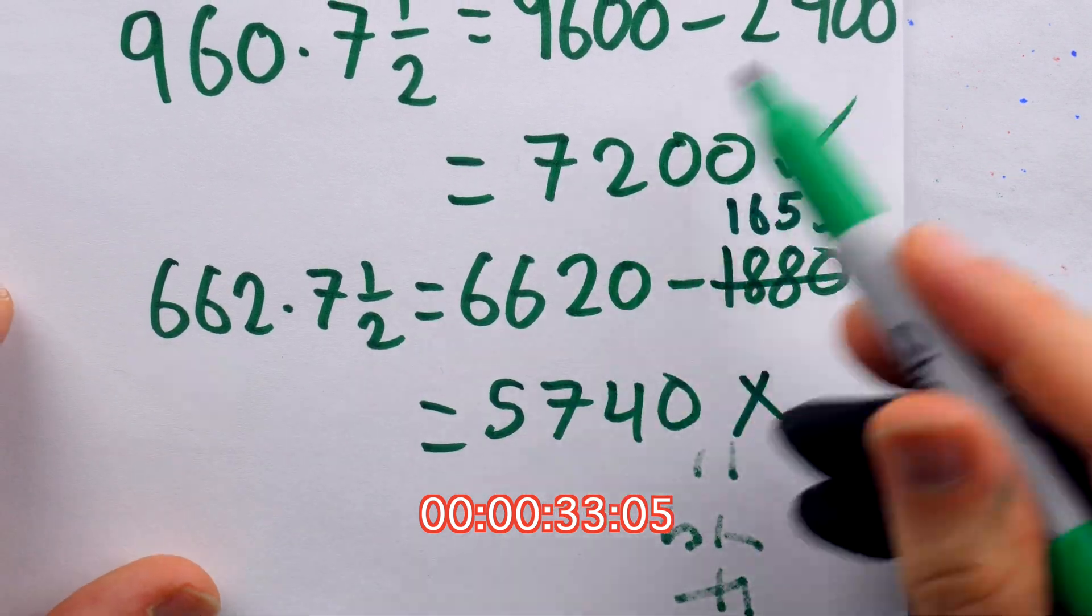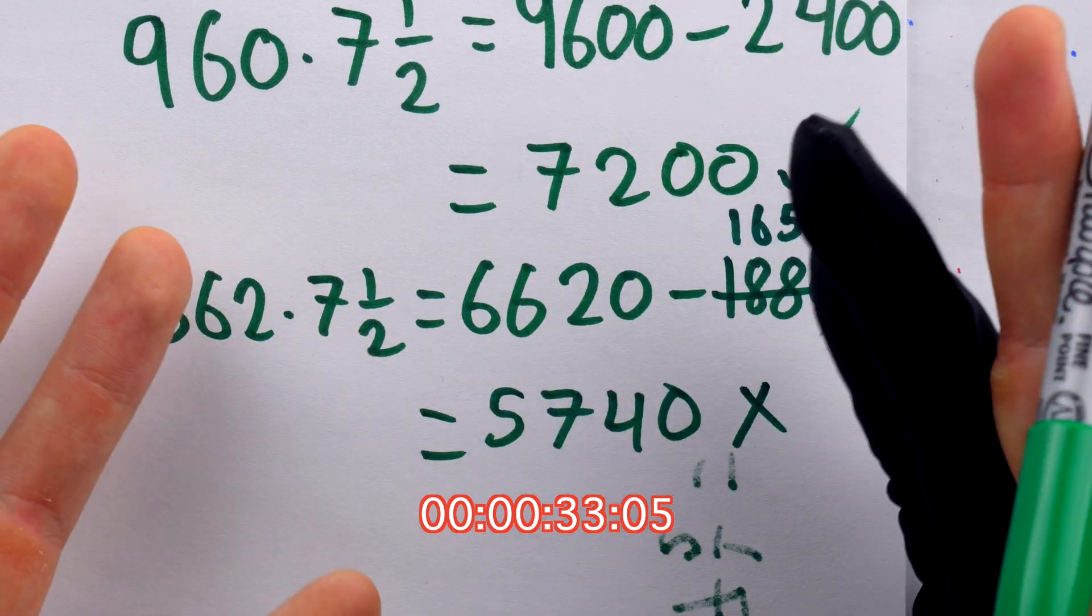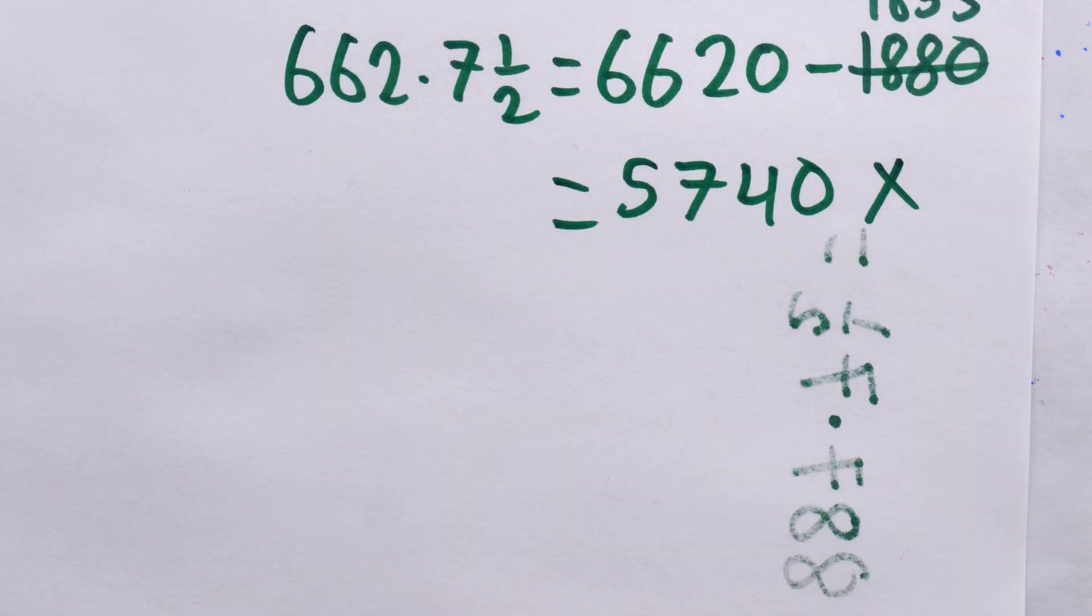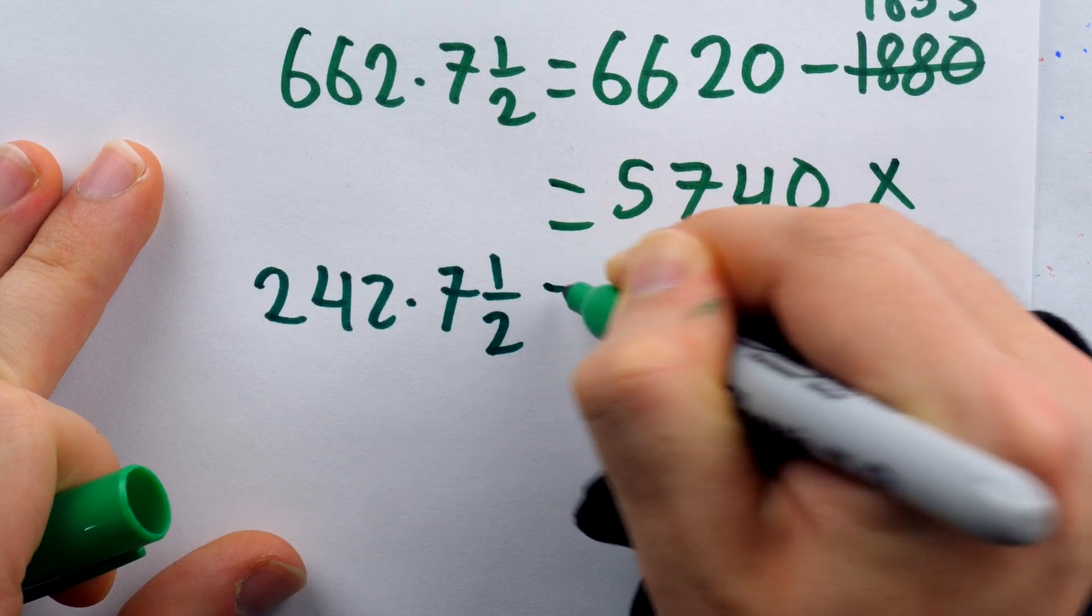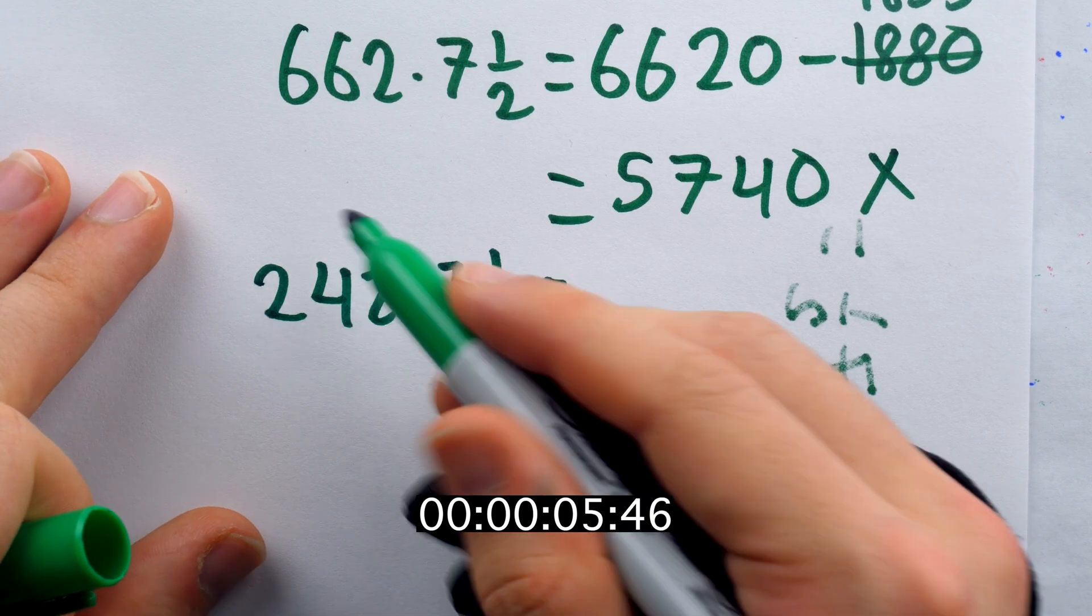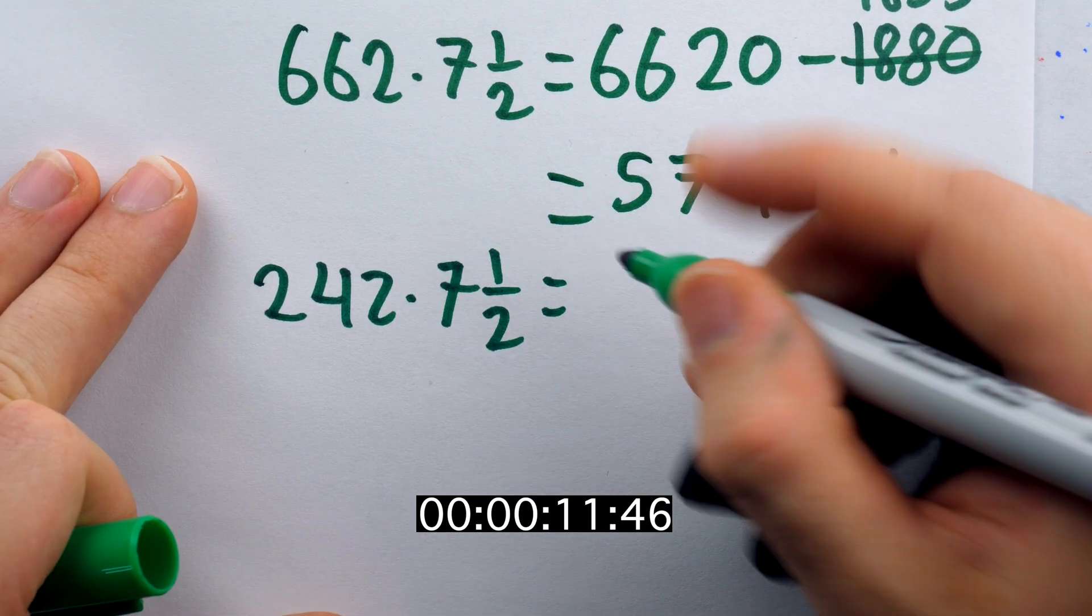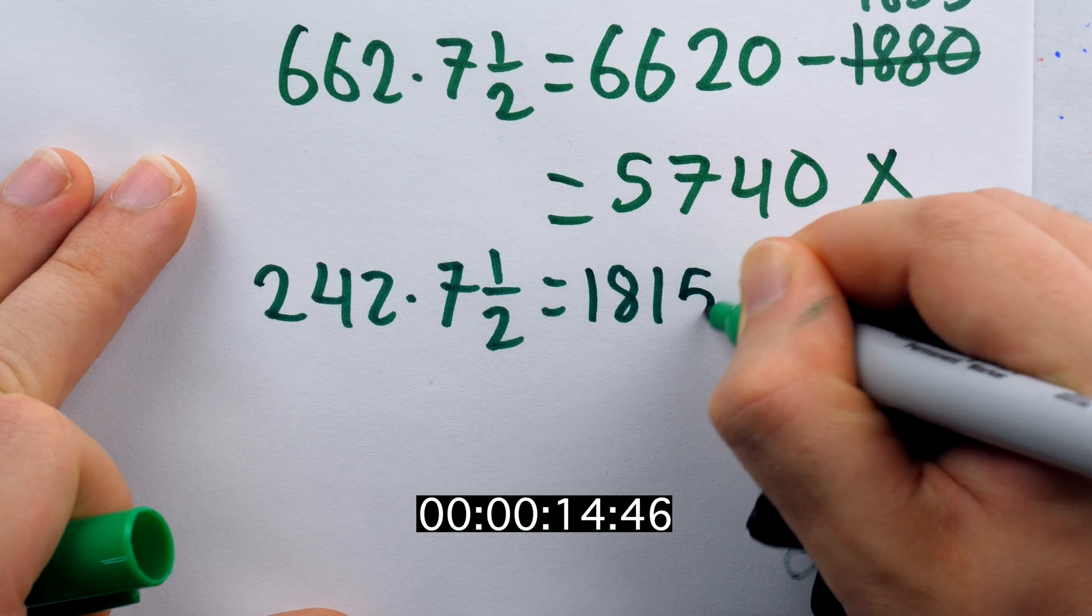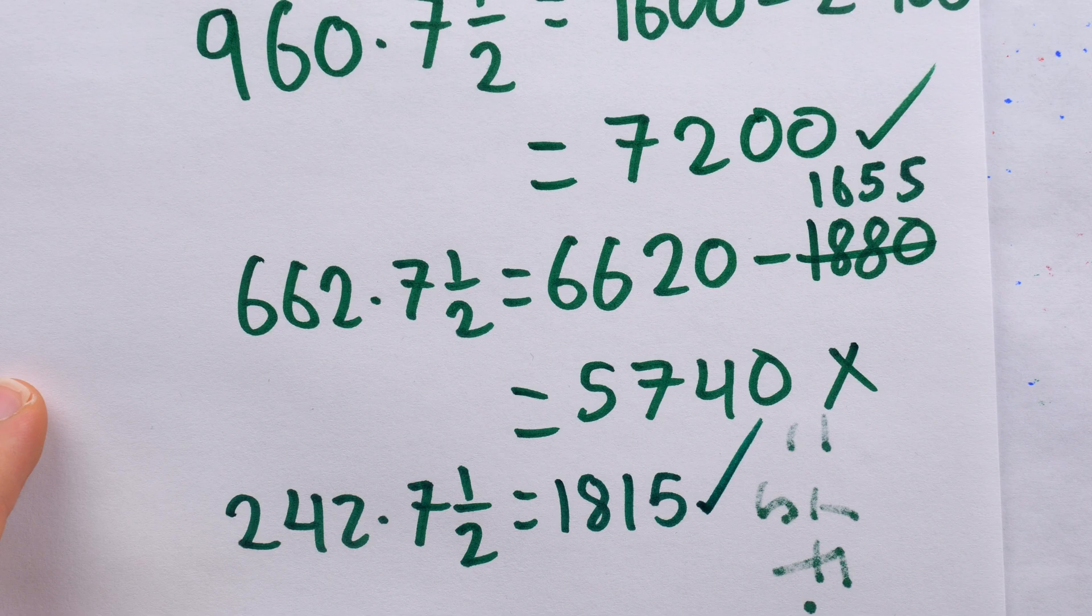So at least for me, this is where the trick sort of falls apart is that in general, finding a fourth of something is just not trivial. I find juggling the numbers in my head the standard way much easier. But we're going to try busting out one more. We've got 242 times 7 1⁄2. A fourth of 242 is just 60.5. So if we just take away 60.5, then we're going to get 181.5. So 181.5 times 10, it's going to be 1,815, I think. That one was correct, too. So two for three with both methods.